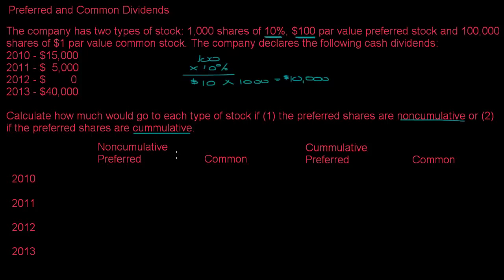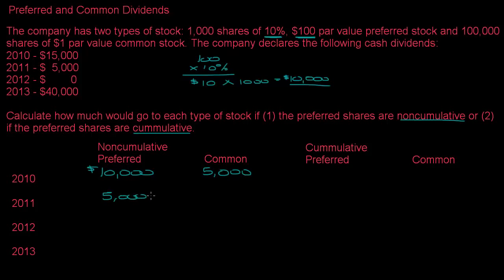Let's do non-cumulative first. Out of any payment, the preferred shareholders are going to get up to $10,000 first. In 2010 there's a total dividend of $15,000 — the first $10,000 goes to preferred shareholders, and the remaining $5,000 goes to common shareholders. In 2011, the company only paid $5,000, so preferred shareholders get $5,000 and common shareholders get nothing.